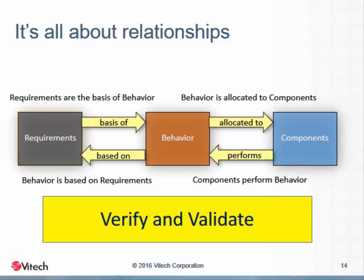The relationships among the four domains form the structure of the basic schema for model-based systems engineering. Requirements are the basis of behavior; behavior is allocated to the components; the components perform the behavior, which is in turn based on the requirements. These relationships provide what is known as bi-directional traceability. The verification process uses this traceability to assure that all requirements have found expression in the physical architecture, and that everything in the physical architecture is justified by the requirements. Validation provides assurance that requirements actually express the needs of customers and stakeholders. The model must provide a complete view of all aspects of this schema.